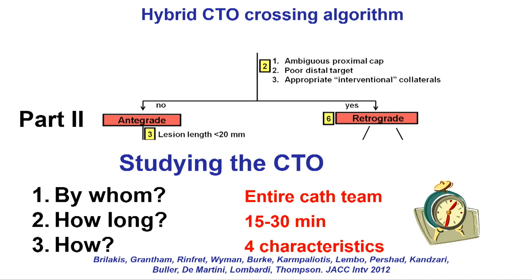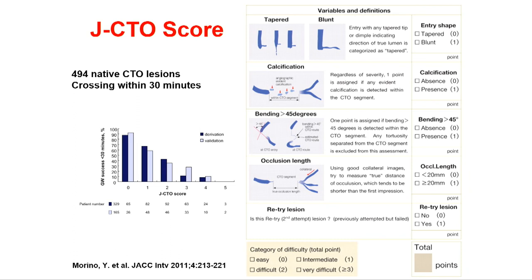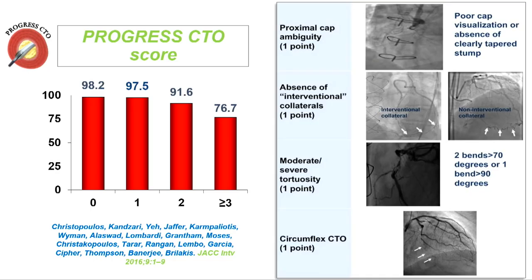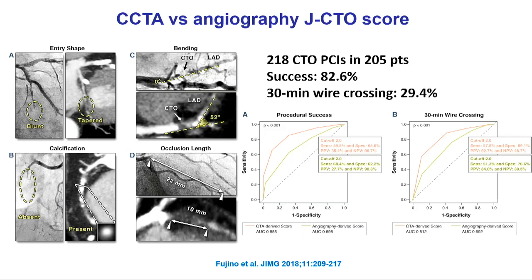The PROGRESS CTO score works along the same lines — start with simpler lesions and progress to more complex ones as experience grows. Coronary CTA is increasingly used and has particular impact for complex lesions, as it can visualize the distal vessel and was more accurate than angiography in predicting success. Examples range from easy lesions — nice tapered cap, soft, no calcium — to disasters with long occlusion length, calcification throughout, and side branches at the cap.